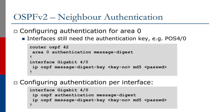We can configure authentication per interface only if we want to — we don't need to configure it for the whole area. In that case we simply go to the interface, state we're going to do neighbor authentication, and then supply the key as you see in the example.